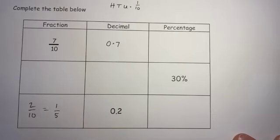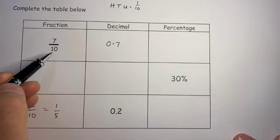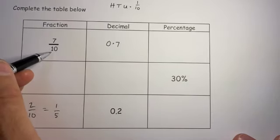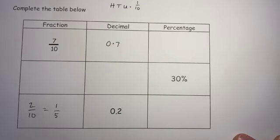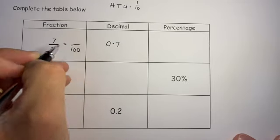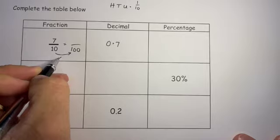Back to the first one though, in order to get this as a percentage, if that was written out of a hundred, I'll know straight away what the percentage is because percent means out of a hundred. Well I can get that to be out of a hundred because all I have to do is times that by 10.